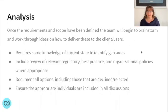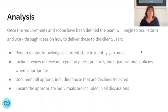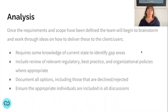Once you've completed requirements and have a defined scope, the team brainstorms and works through ideas on how to deliver the outcomes. In the analysis phase, you need to understand the current state to identify gaps and focus areas. Conduct a regulatory review — check for regulations, organizational policies, and best practice guidelines to incorporate. Document all options, including those that are rejected, for transparency and future reference. Make sure all appropriate stakeholders are included in these discussions.